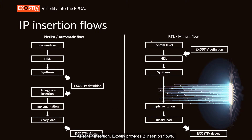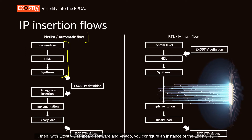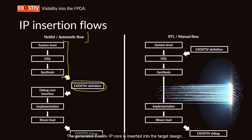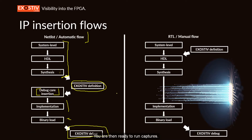Exhaustive provides two insertion flows. The first is called the automatic or netlist flow, available for Xilinx FPGAs. It uses an integration with Vivado to insert the Exhaustive IP after design synthesis. First, you synthesize the target design; then, with the Exhaustive dashboard software in Vivado, you configure an instance of the IP and select the nodes to observe. The generated IP core is inserted and connected to the chosen nodes automatically. After this, you run place-and-route, configure the target board, and you are ready to run captures.